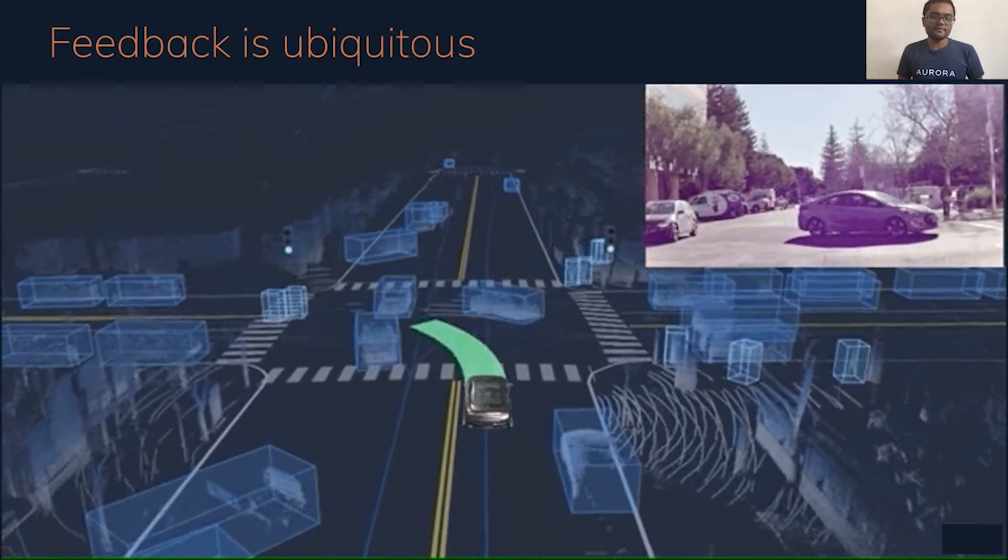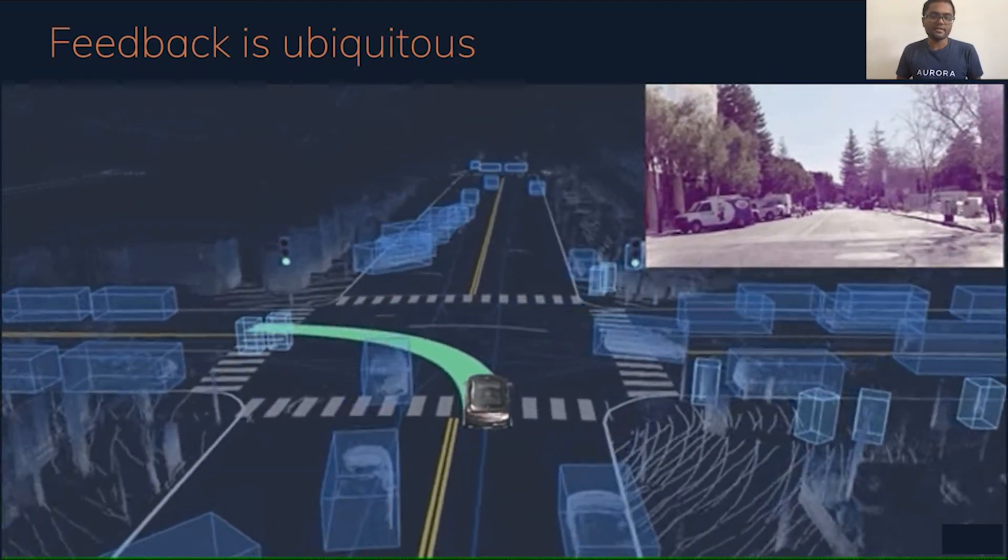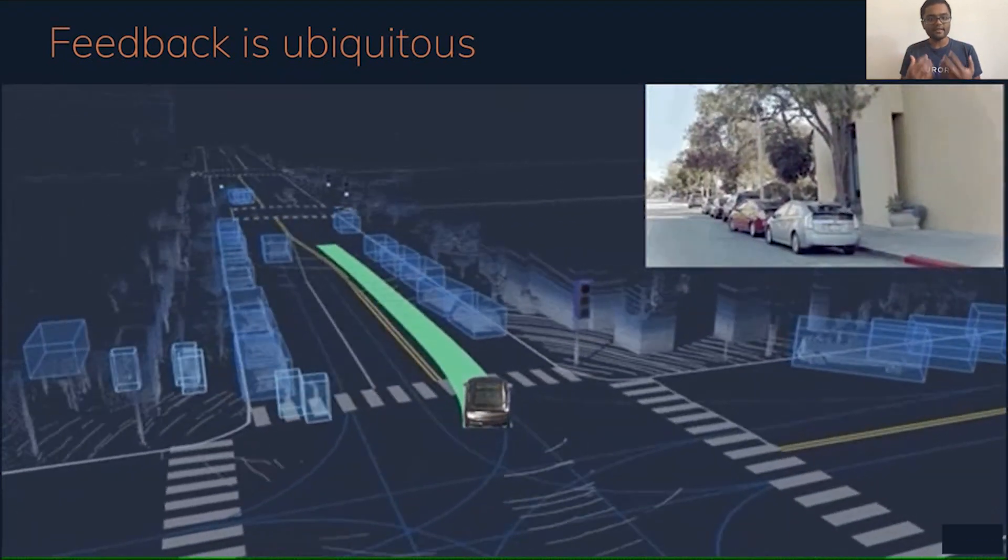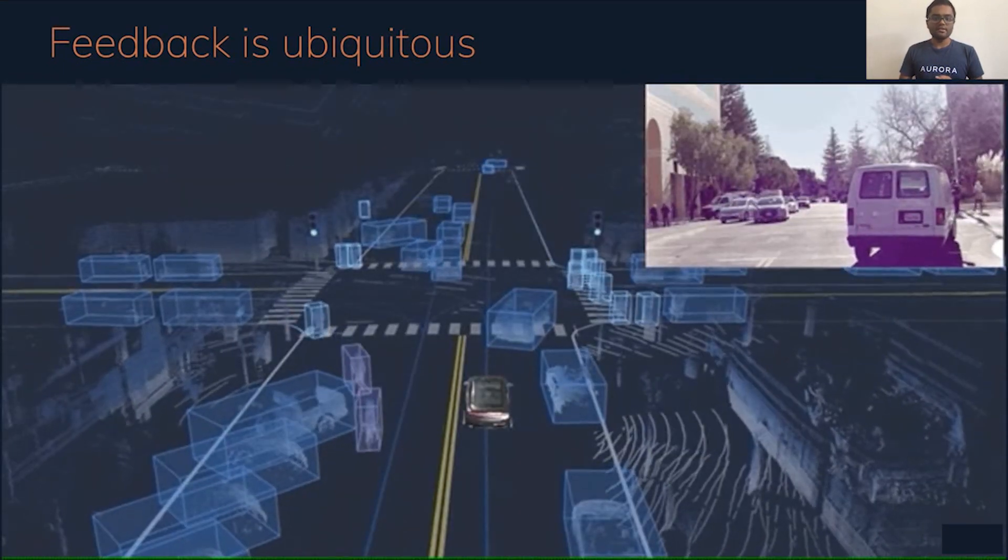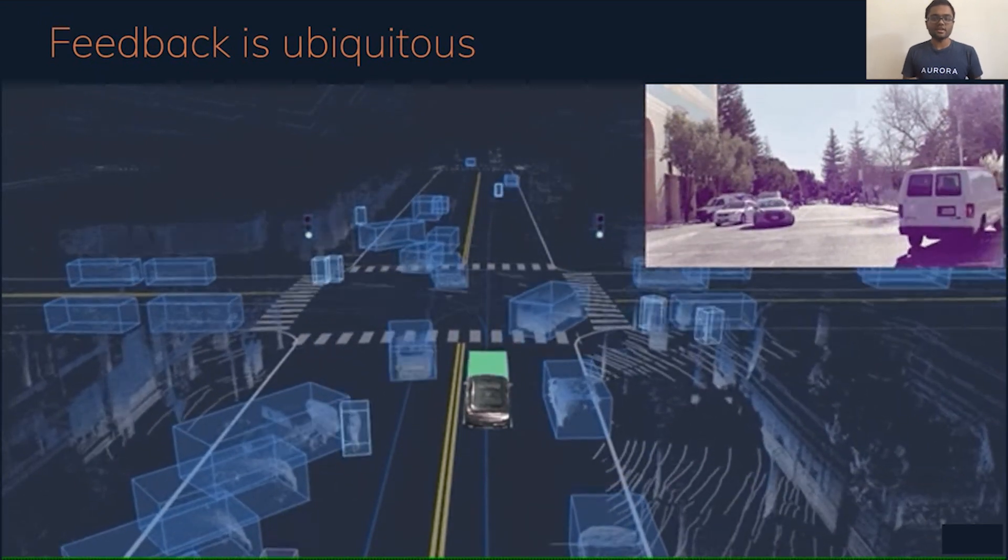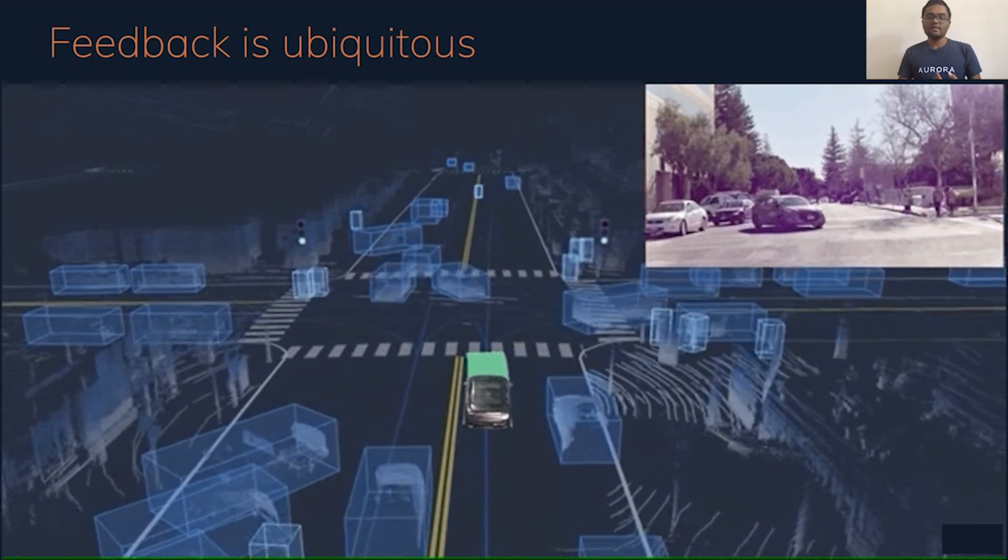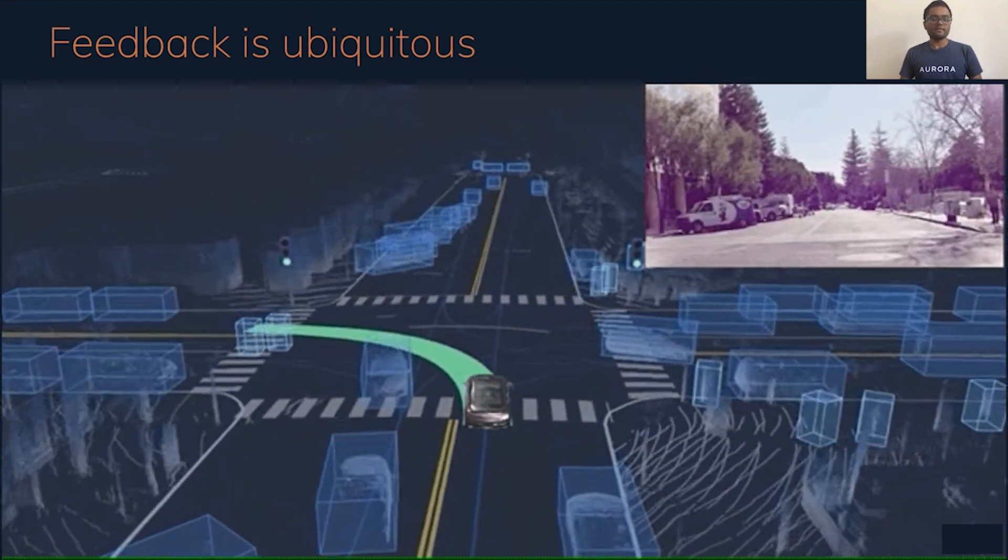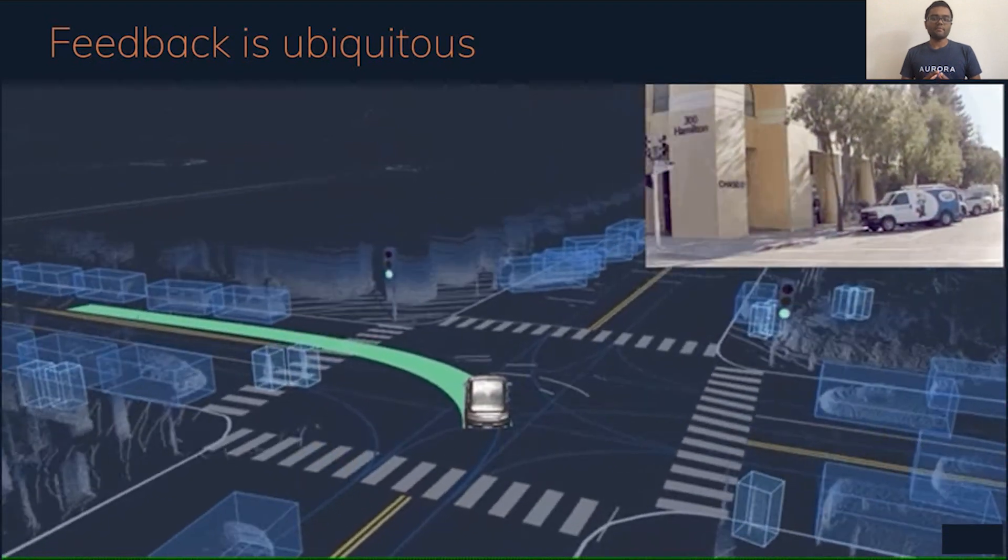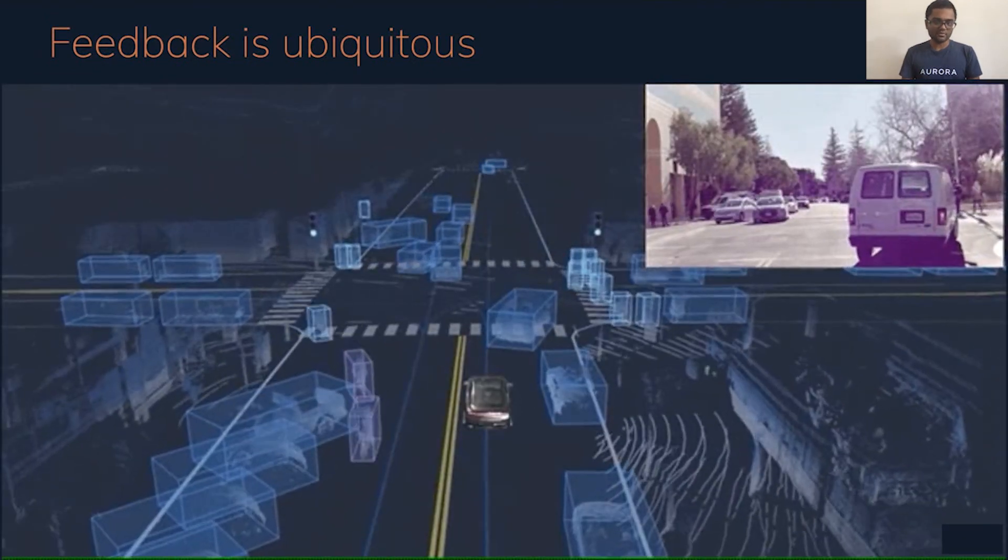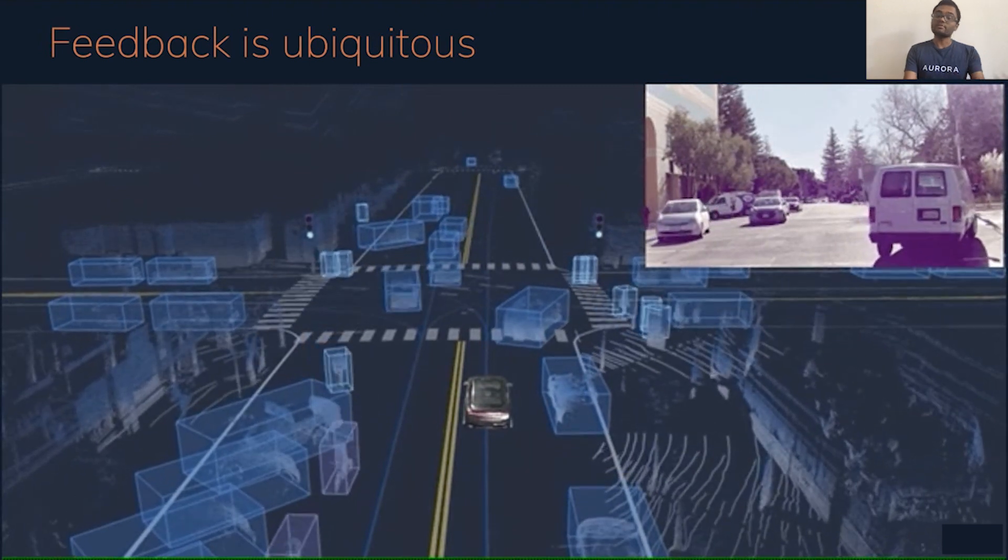And this is another example of the Aurora driver taking an unprotected left turn. And again, our actions matter. They affect how other actors around us will also respond. If you decide to be very aggressive on a turn, this will affect how other people decide to yield or not yield to us, which changes the features, which then changes how we should respond. So there is feedback that naturally happens both in terms of internal to the robot itself, but also in how it responds with the world around it and how the world around it responds to it.